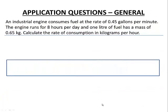Another example: an industrial engine is consuming fuel at the rate of 0.45 gallons per minute. The engine runs for eight hours per day. One liter of fuel has a mass of 0.65 kilograms, and we want to calculate the rate of consumption in kilograms per hour.